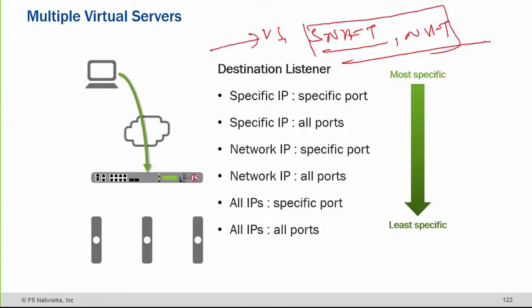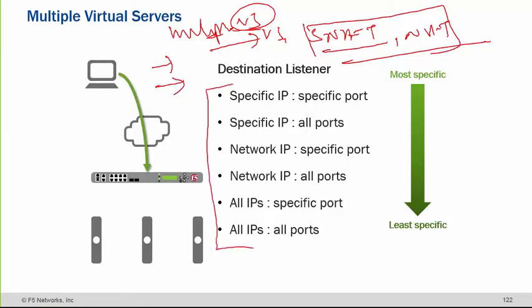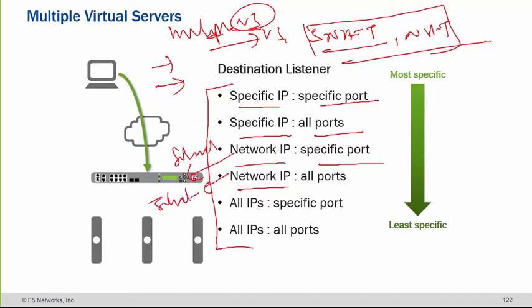If you have created multiple virtual servers — one virtual server with a subnet mask, one virtual server with the IP only — we have created multiple virtual servers: specific IP with specific port, specific IP with all ports, network IP with specific ports. Network IP means subnet mask, while here you are assigning a single IP to the virtual server. Which one is preferred? The preferred is like the longest match, just like a routing table.